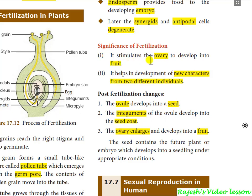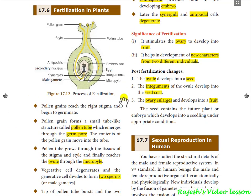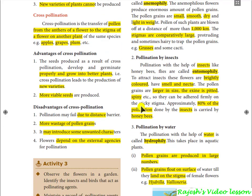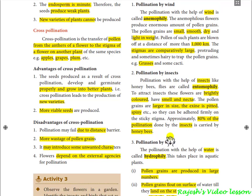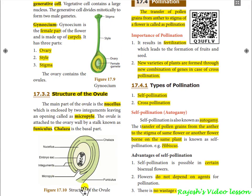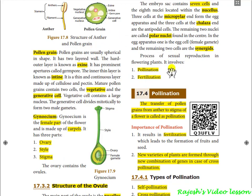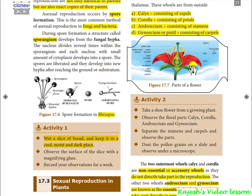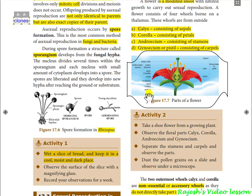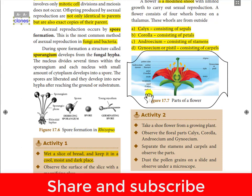This is a very important chapter with many exam questions, such as post-fertilization changes, fertilization in plants, types of pollination agents — anemophily, hydrophily, entomophily, and zoophily — advantages and disadvantages of cross-pollination and self-pollination, structure of ovule, structure of anther and pollen grain, and parts of the flower. Go through these important points. If you have any doubts, keep commenting in the comment section. Thank you, I hope this video will be useful for you.